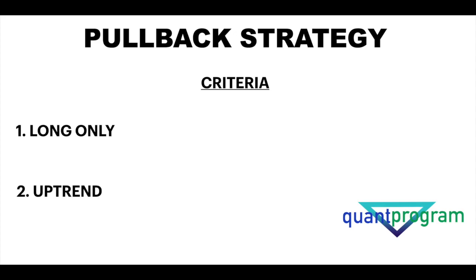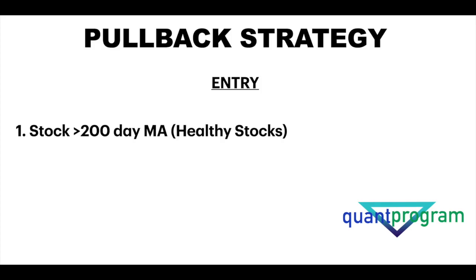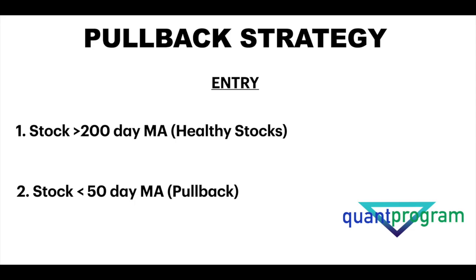The second condition is that we only pick stocks which are in an uptrend. When the market is going in an uptrend and pulls back, that's when we consider entry. The first entry condition is that the stock must be above the 200-day moving average. This helps us pick out healthy stocks — any stock above the 200-day moving average has a technical advantage. It's widely reported by financial news channels globally, so that's our first entry condition.